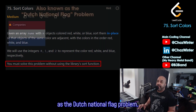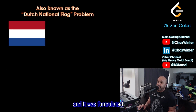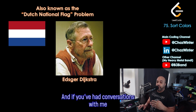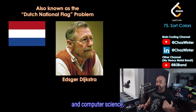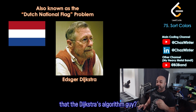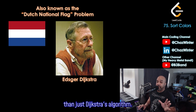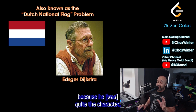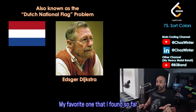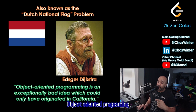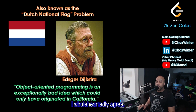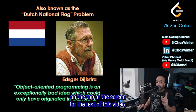This problem is also known as the Dutch National Flag problem, formulated by famous computer scientist Edsger Dijkstra. If you've had conversations with me about coding and computer science, you've probably heard me talk about him — yes, he's also the Dijkstra's algorithm guy. But there's a lot more to him than just that algorithm. I highly encourage you to read up on him because he's quite the character. He has a lot of really fun quotes, and my favorite one I'm going to put on the top of the screen for the rest of this video.